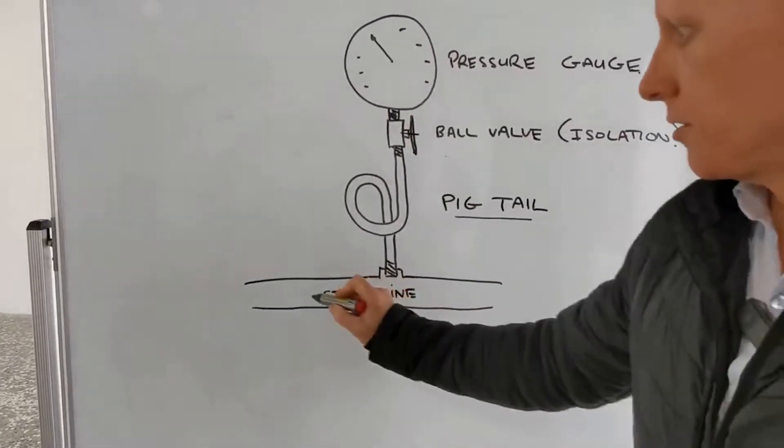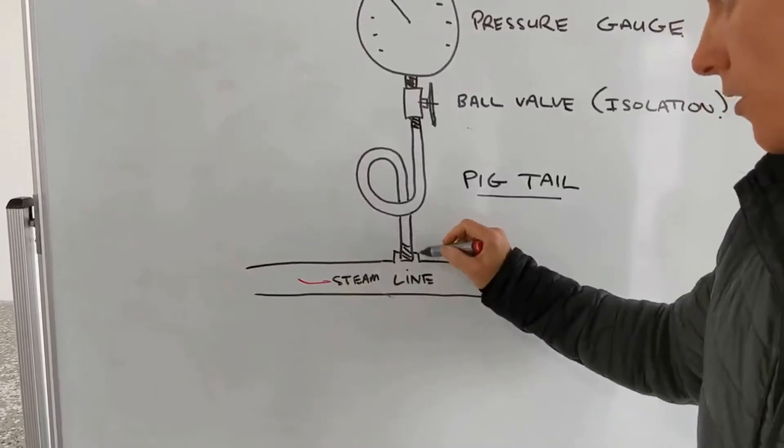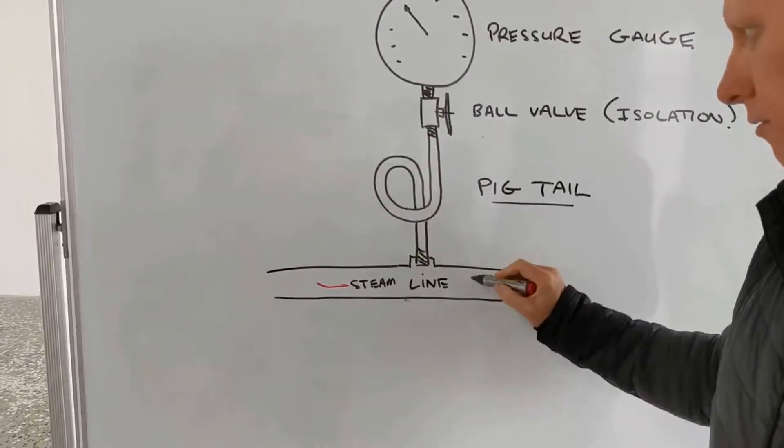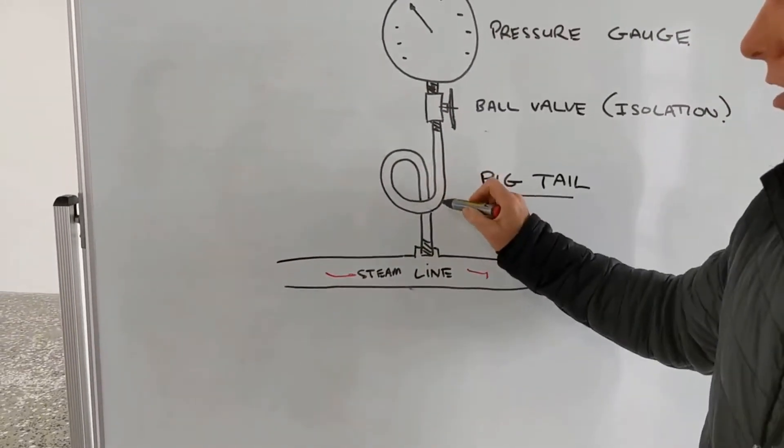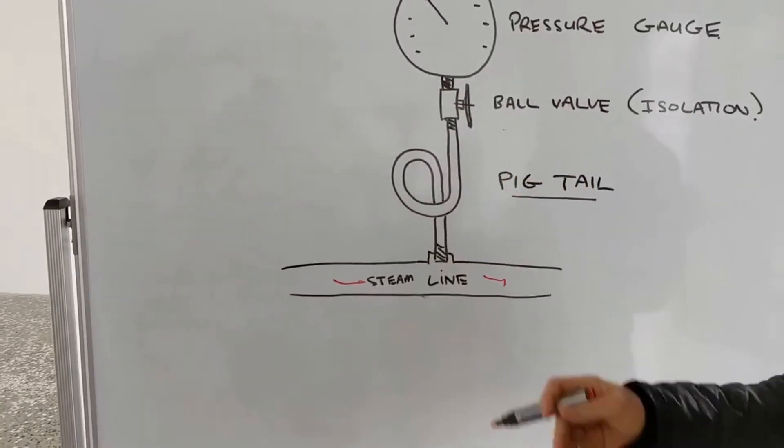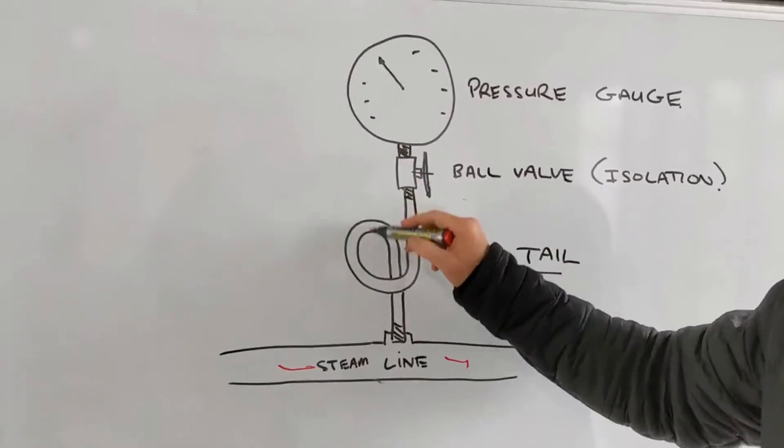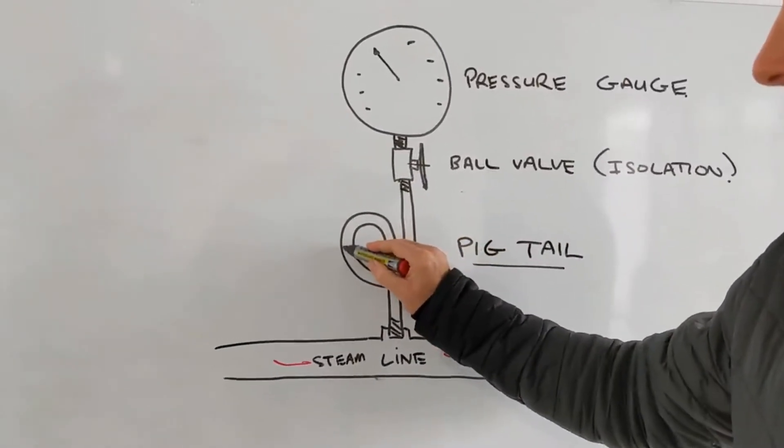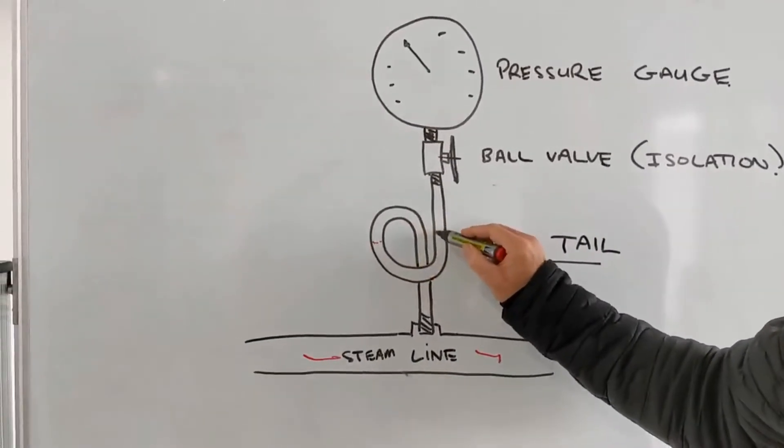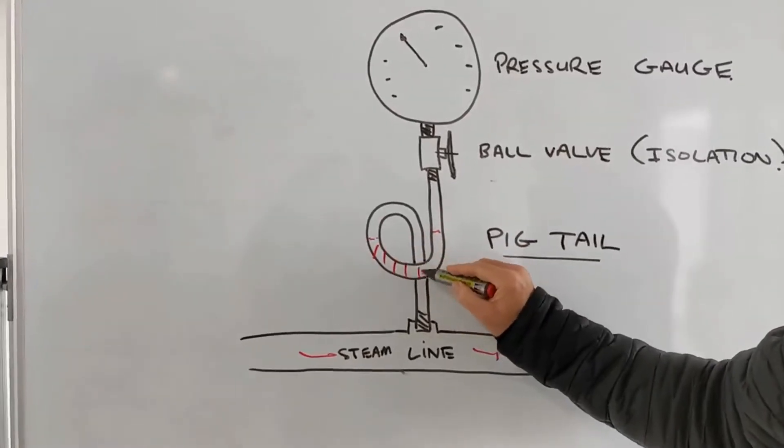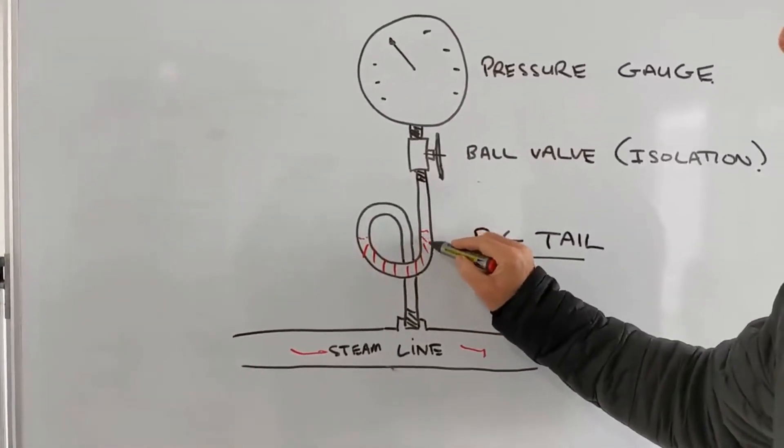The idea is your steam is flowing through your steam line here, it will come up into your pigtail siphon. The thing about steam is it'll give off heat to what it's touching and its environment around it, and then it will condensate. So this bend here will fill up with condensate, much like your waste trap in your bathroom.